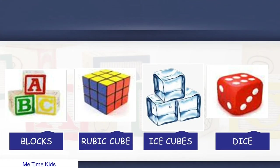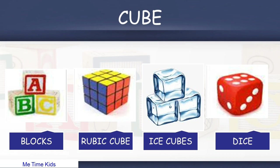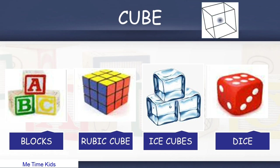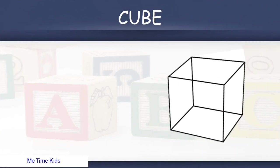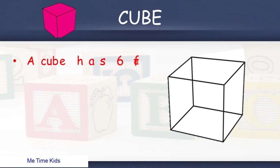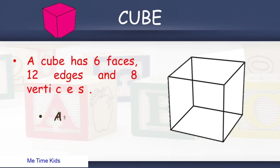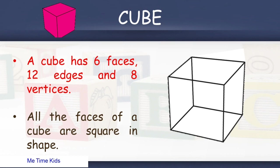Second is cube. Some examples of cube are Locks, Dice, and ice cubes. Let's see its properties. A cube has 6 faces, 12 edges and 8 vertices. All the faces of a cube are square in shape.